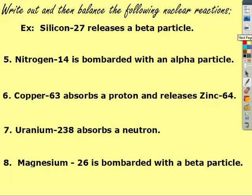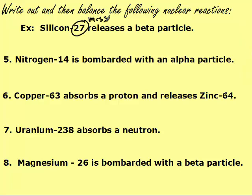On our first sample problem, it says silicon-27 releases a beta particle. Remember that 27 is the mass, so the mass goes on top. Silicon's atomic number, which is 14, goes on bottom.